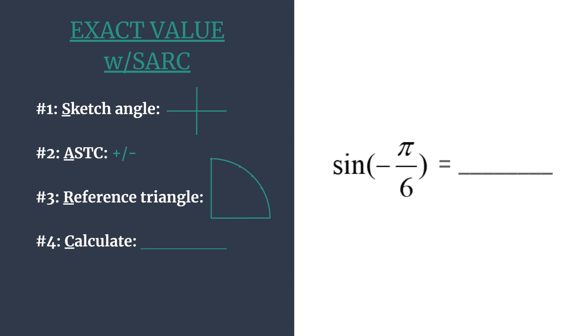And so we're trying to find the sine of negative pi over 6. We'll start with step 1, sketch the angle. Our angle is negative pi over 6. Now remember when there's a negative with an angle that's simply telling you the direction of the rotation, so we should be rotating in the clockwise direction when there's a negative sign.